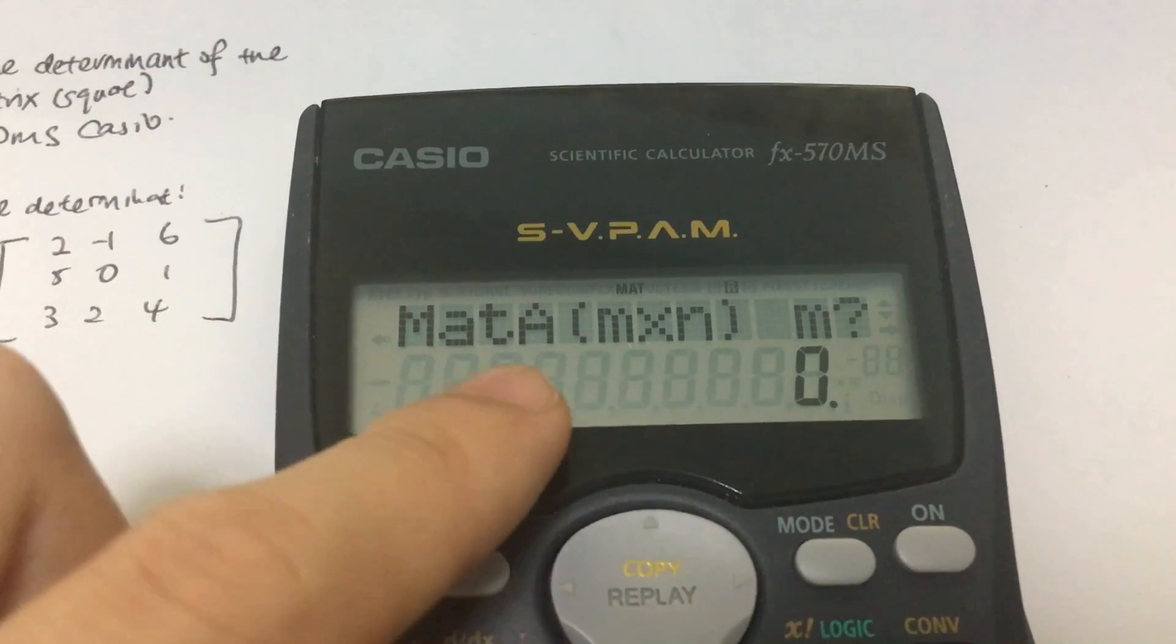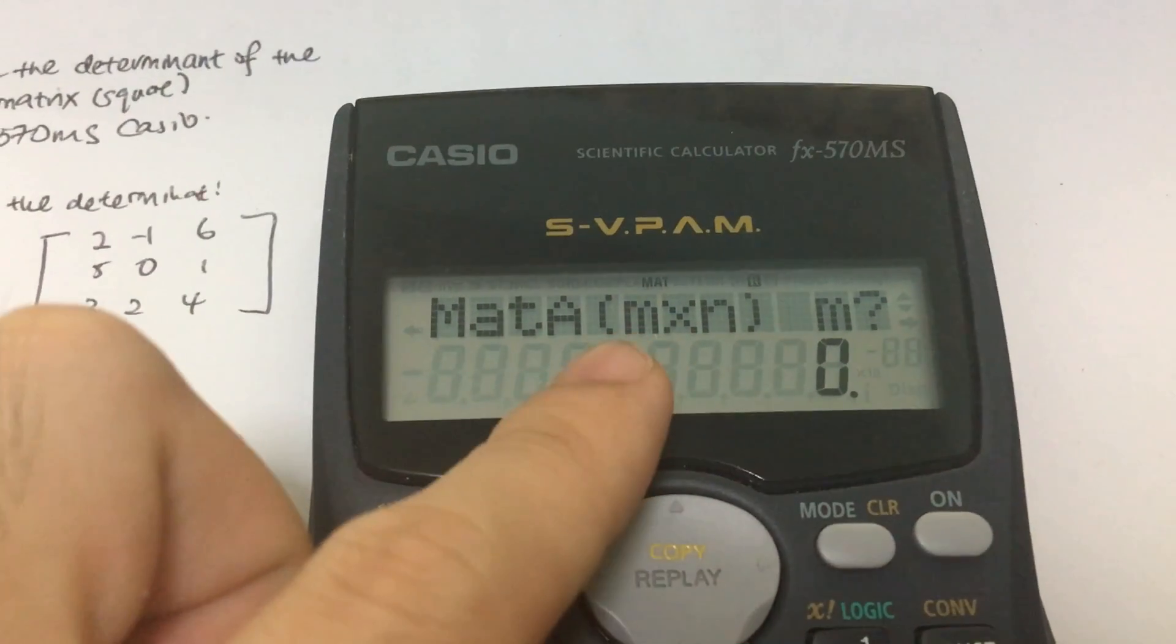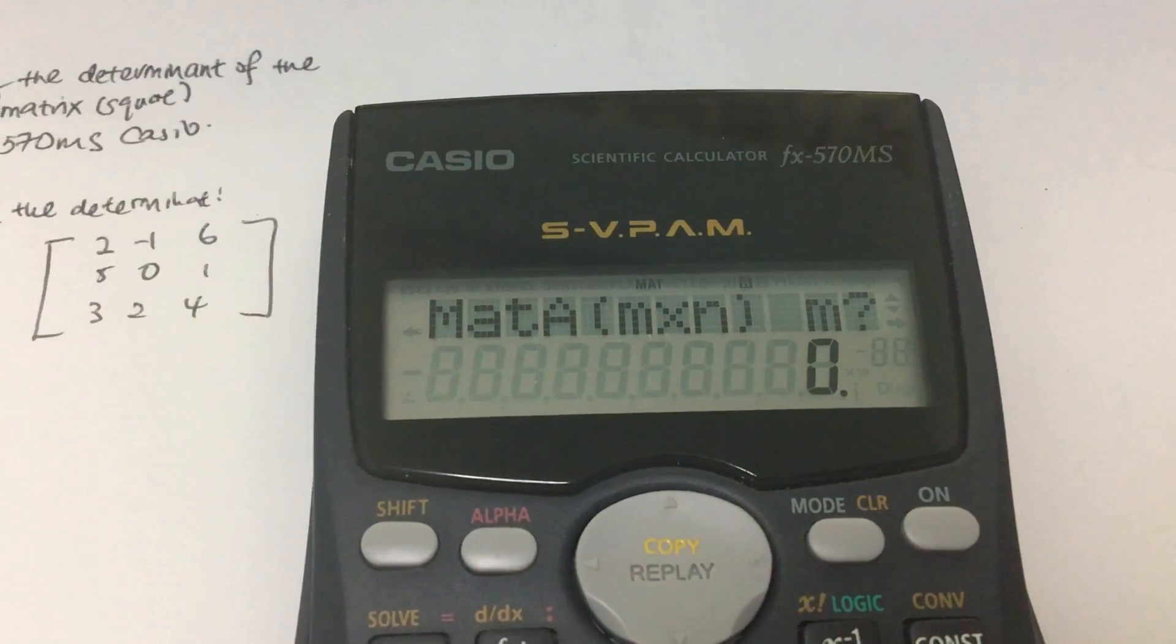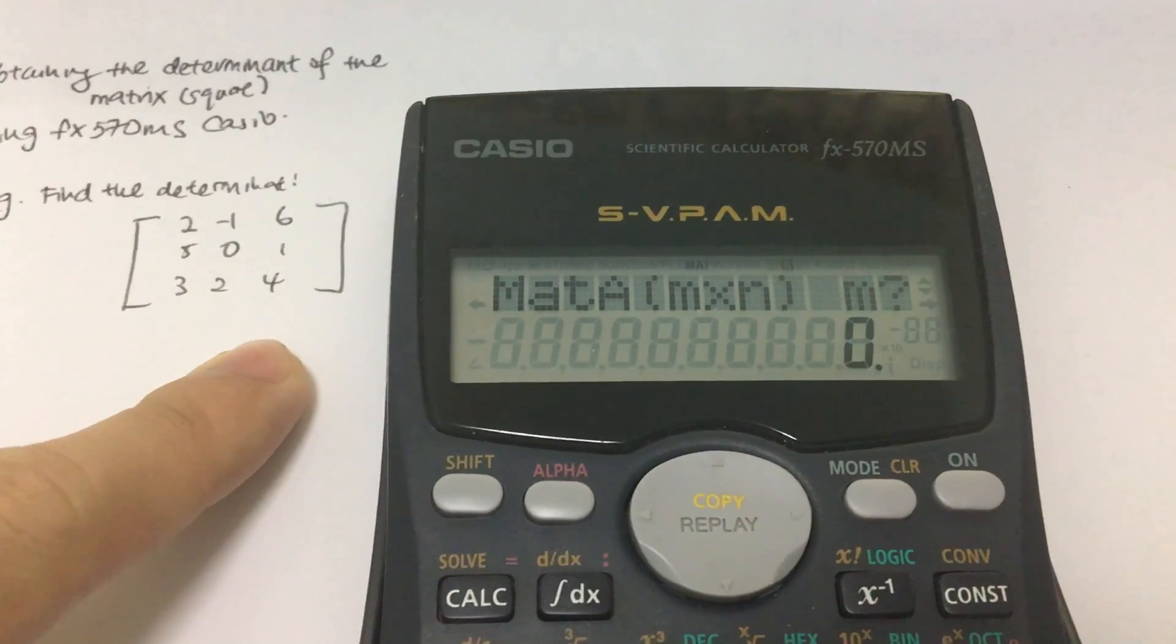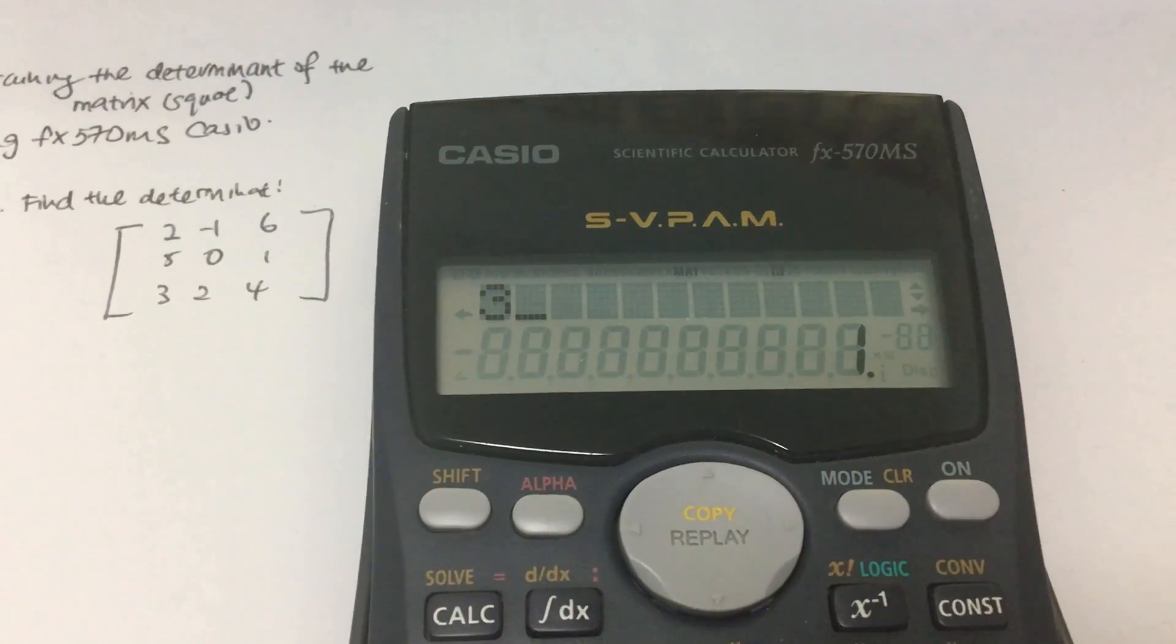So after that it will prompt us to key in what is the number of rows and number of columns. M represents the rows, N represents the columns. So you just key in, because this is a three by three matrix, so you just key in M equals three and N equals three.